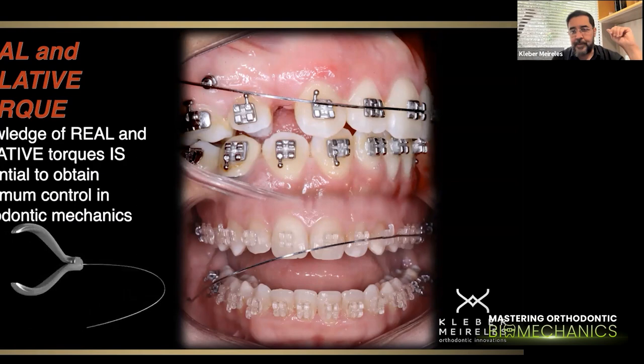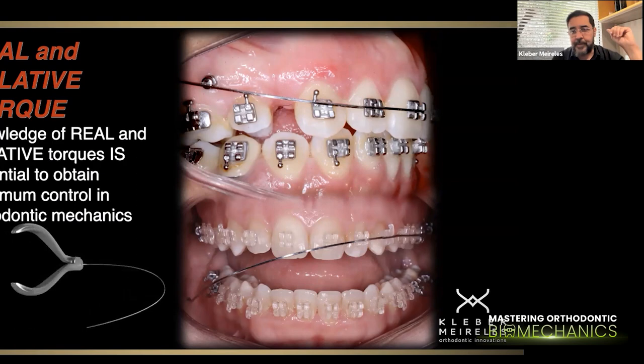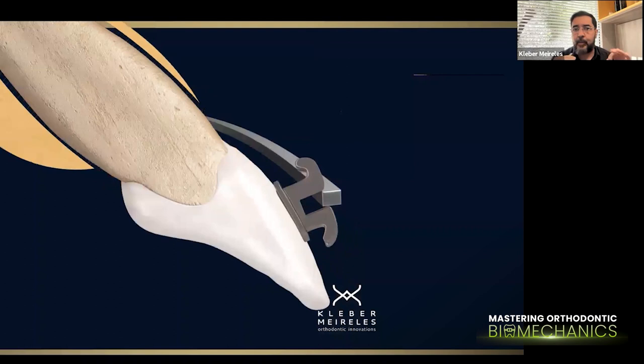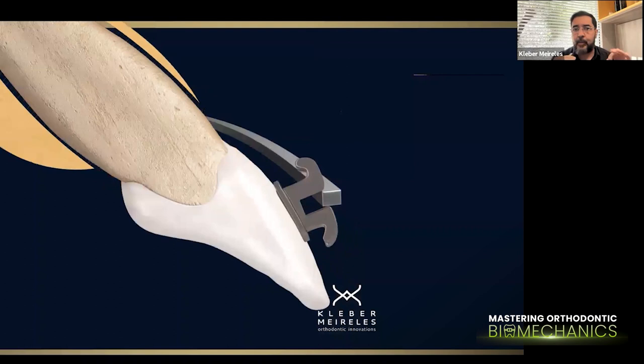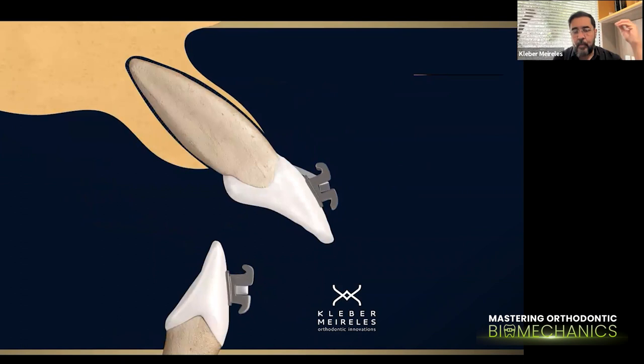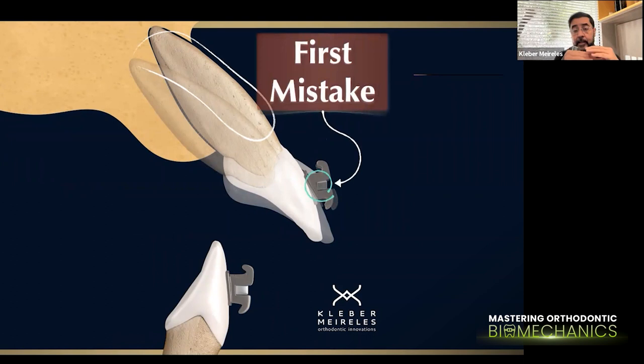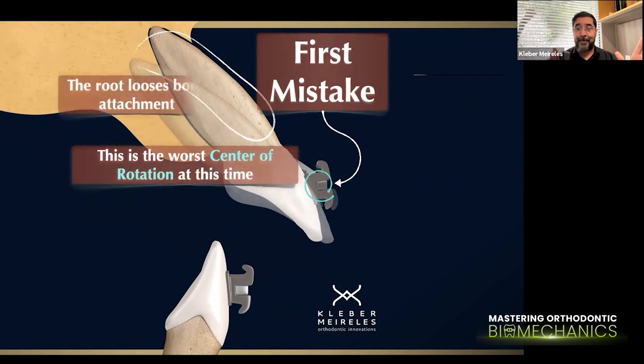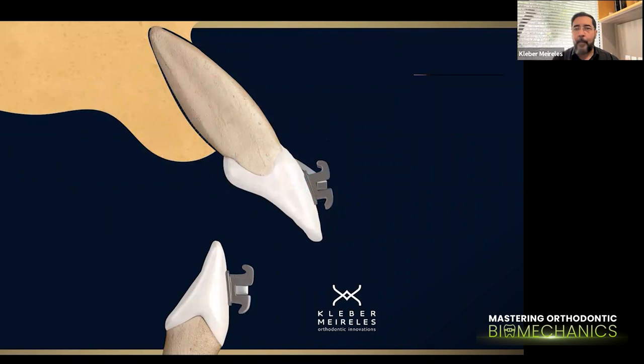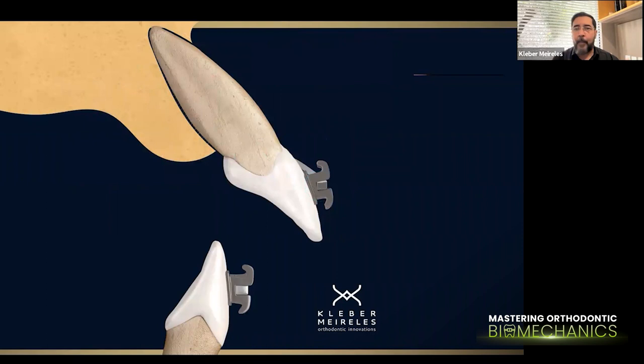One of the concepts I want you to understand is the relative and real torques that we apply in our mechanics. The real torque itself is the torsion that we apply to the wire so we can have a better relationship between the wire and the slot. For example, putting a rectangular arch wire inside a rectangular slot will generate — in this case — an active torque. If the anterior teeth are extremely proclined, this torque is an active torque with positive inclination of the root and negative inclination of the crown, generating a couple.